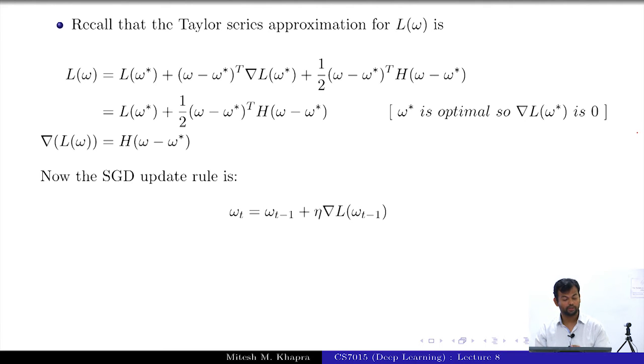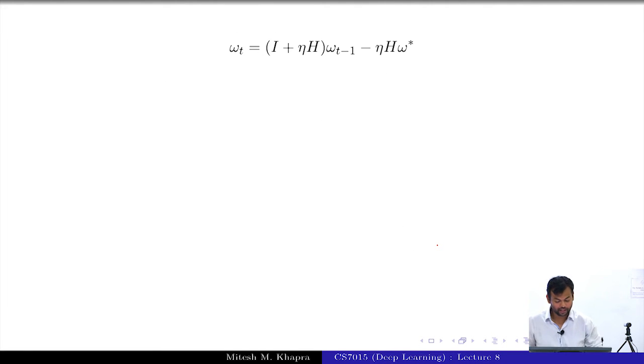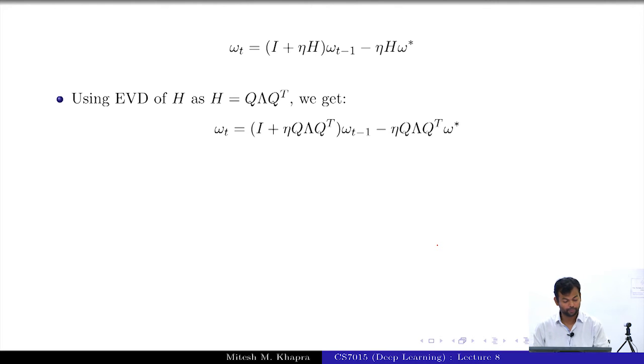The derivative of this quantity is just this and the derivative of this is 0 because that is exactly what we started off with, that w* is the optimal solution. Everyone is fine with this? Now the SGD update rule is the following, which I can write as this. I just replaced this by this. I am just rearranging some terms. How many of you are fine with this? How many of you just too tired to even care about this?